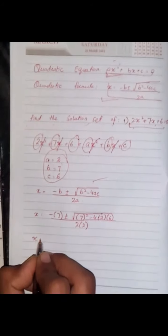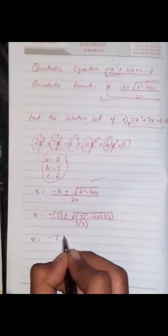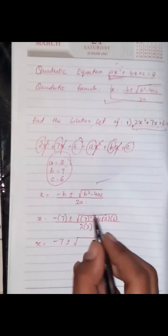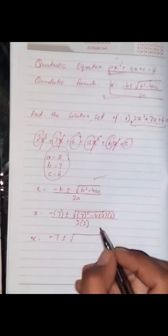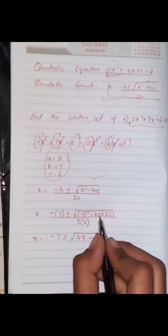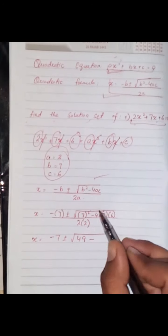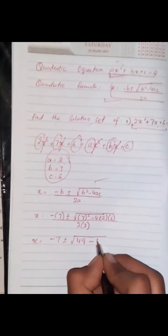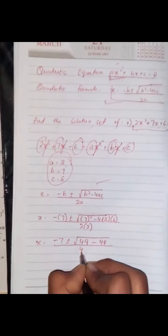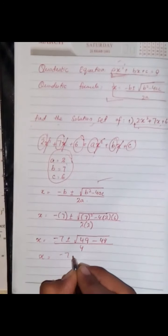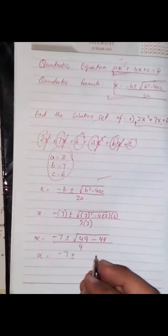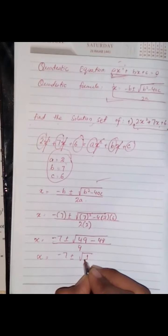x = -7 ± √(49 - 48). The square of 7 is 49, and 4 times 2 times 6 equals 48. We can subtract 48 from 49, and the answer will be 1.